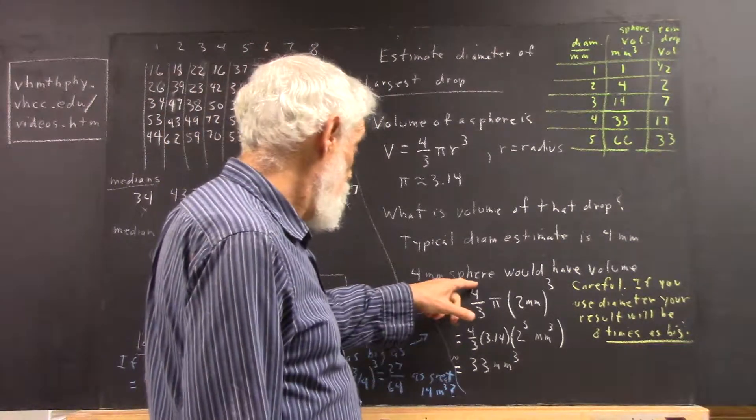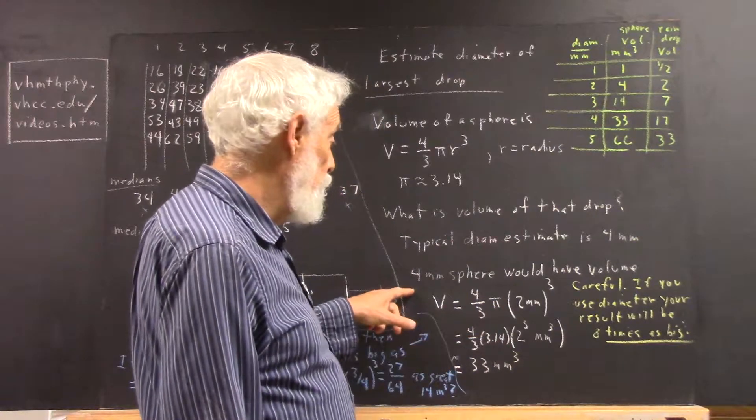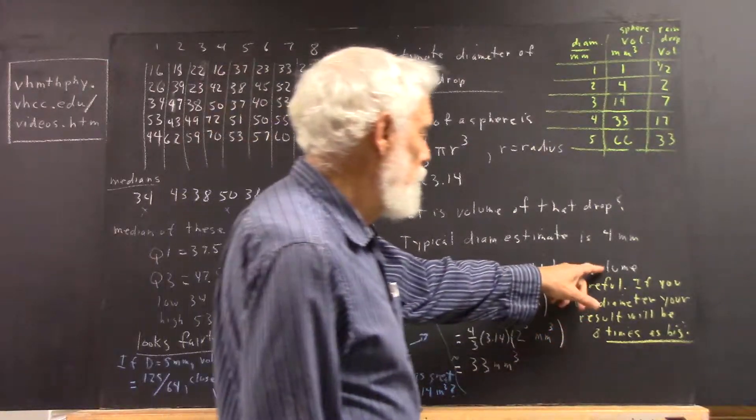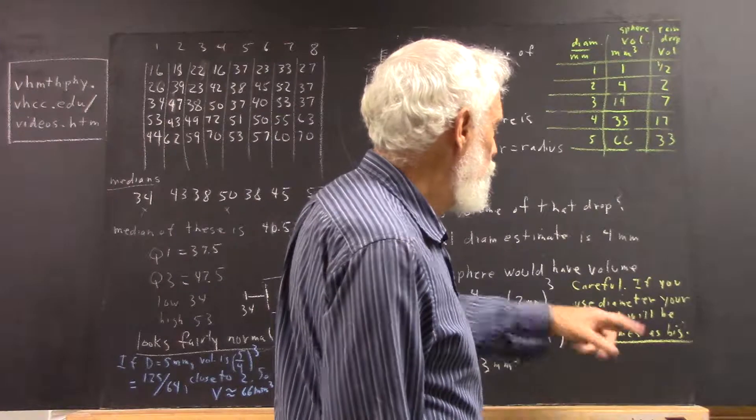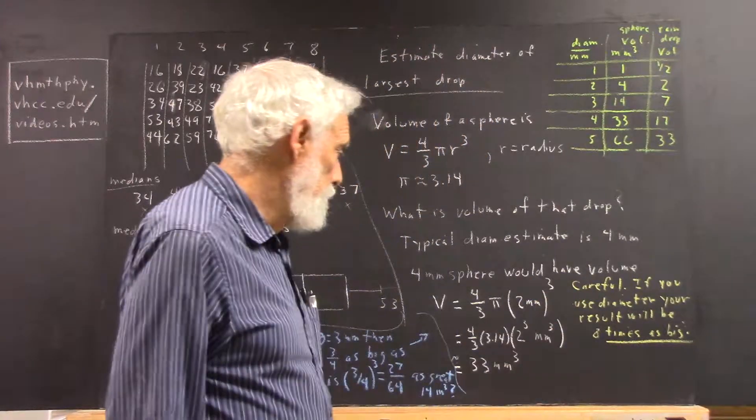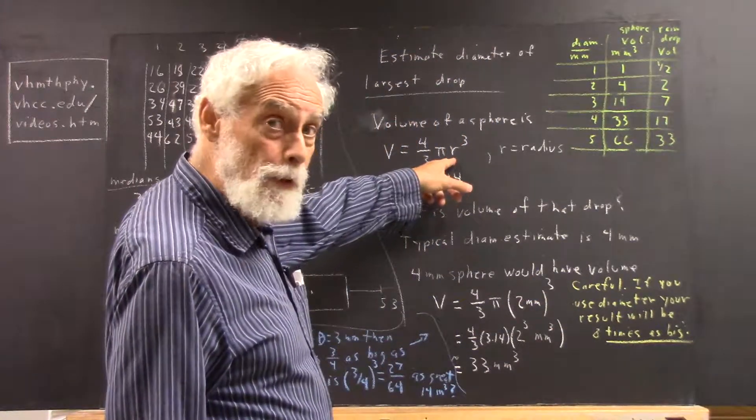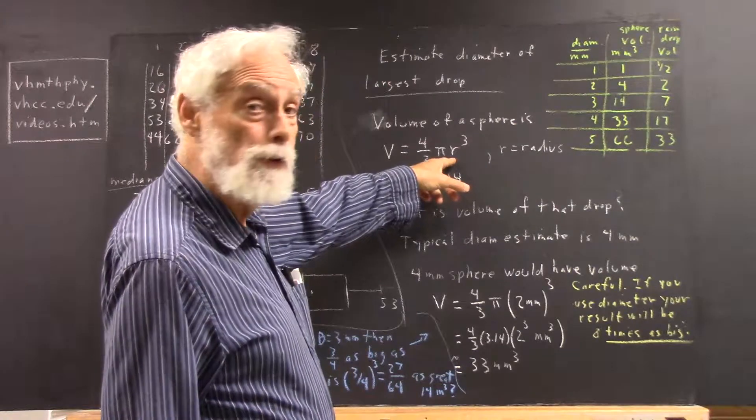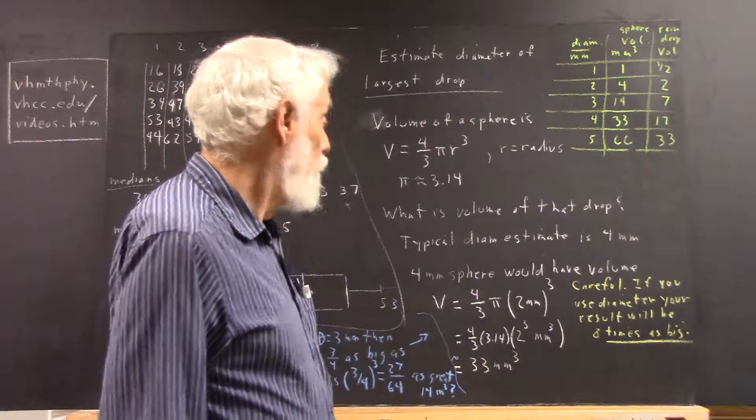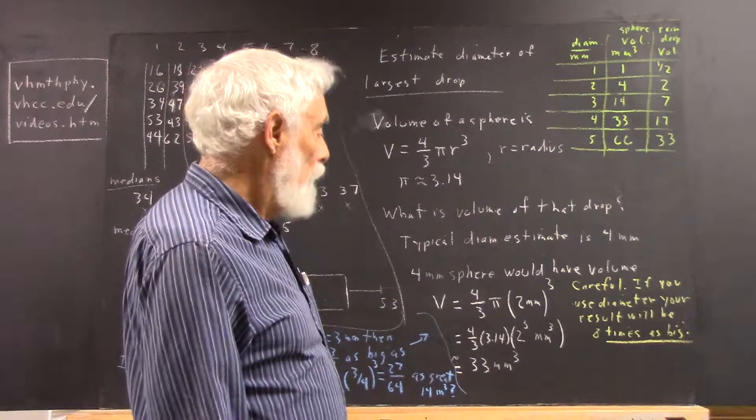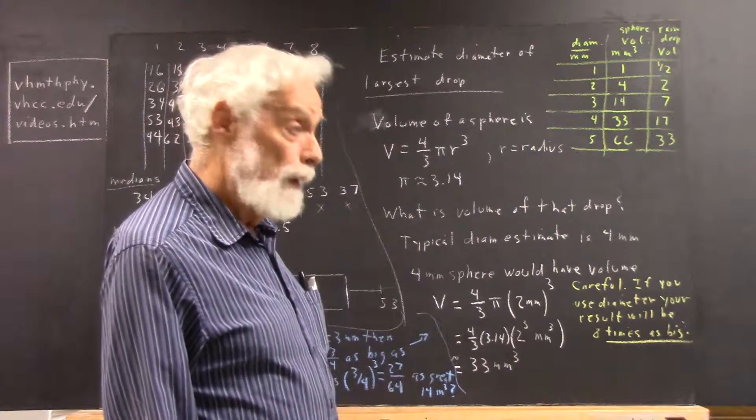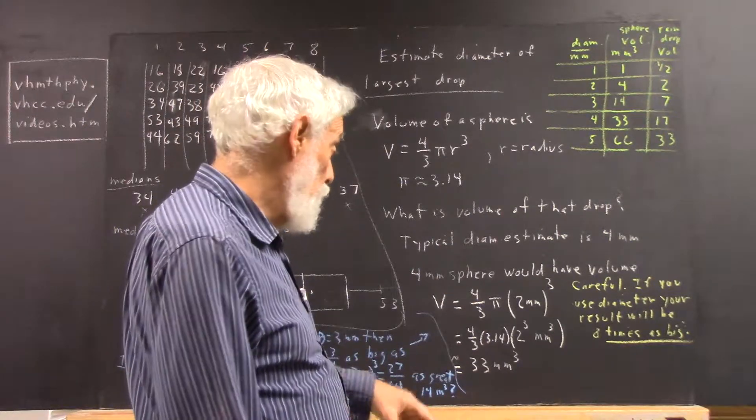And the calculation would go as follows. Well, first of all, you've got to be careful. If you use the diameter, your result's going to be eight times too big. Because this doesn't say diameter, this says radius. Well, everybody knows that the radius is half the diameter, so we use half the diameter. And if you use the full diameter, you could divide by eight and get the right thing, and you'll see why in a minute.